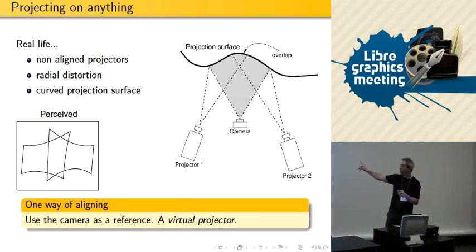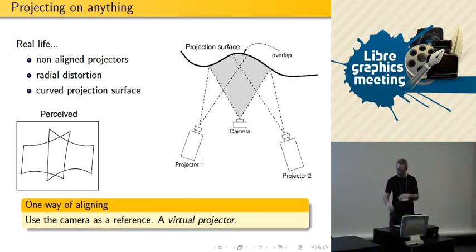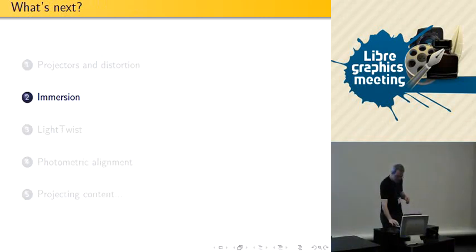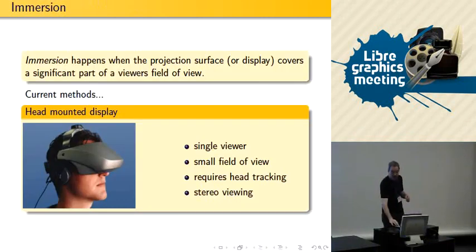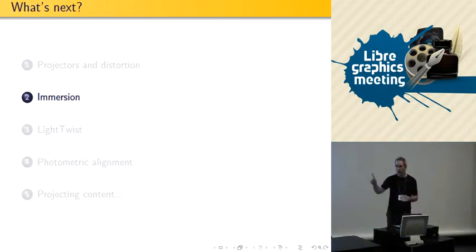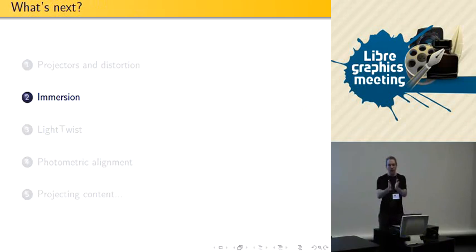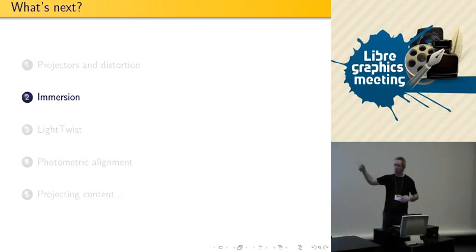So you put a camera there and the camera represents the virtual projector. Before I tell you how we match the camera with the projectors to find the alignment, just one word about immersion.